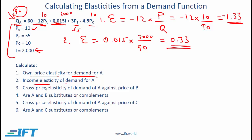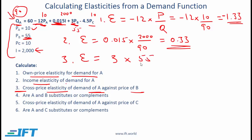For the cross price elasticity of demand for A against the price of B, we take the coefficient 3 — because that's the coefficient related to the price of B — multiplied by the price of B (55) divided by quantity (90), giving 1.83. This is a positive number, meaning that as the price of B goes up, the quantity demanded of A goes up. Therefore A and B are substitutes, with a relatively high cross elasticity.